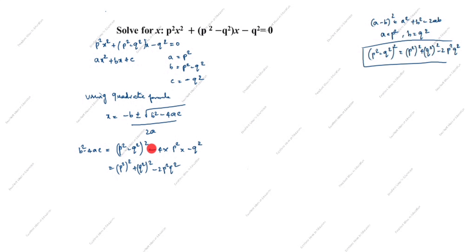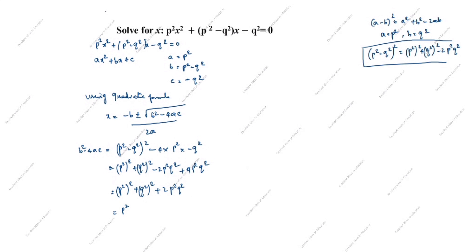Now, minus × minus = plus, so we add +4p²q². So b² - 4ac = p⁴ + q⁴ - 2p²q² + 4p²q² = p⁴ + q⁴ + 2p²q². This is an (a + b)² formula, where a = p² and b = q², so b² - 4ac = (p² + q²)².